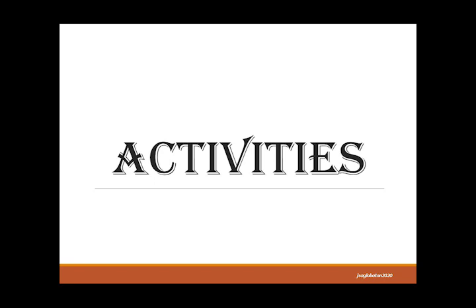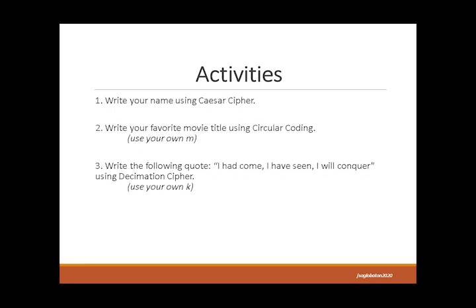For my students, refer to the next parts for practice exercises. You may submit these practice exercises if you think your grades need improvement; if not, you can still practice for your exams. Number 1: write your name using Caesar Cipher. Number 2: write your favorite movie title using circular coding — use your own M. Number 3: write the following quote, 'I have come, I have seen, I will conquer,' using the summation cipher — use your own K. Good luck and God bless. Keep safe everyone. This is Jeng Amor signing off.